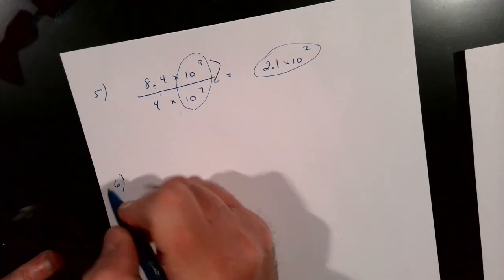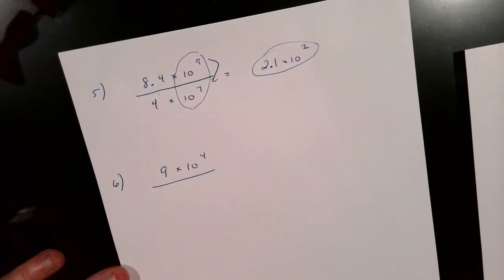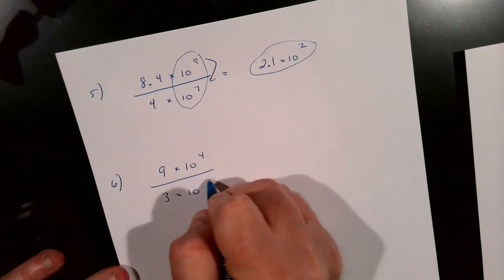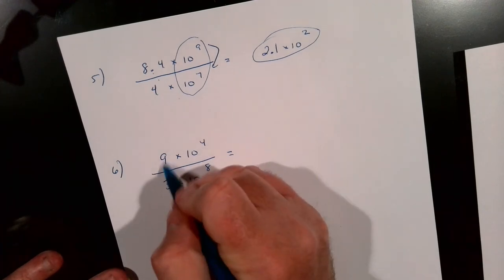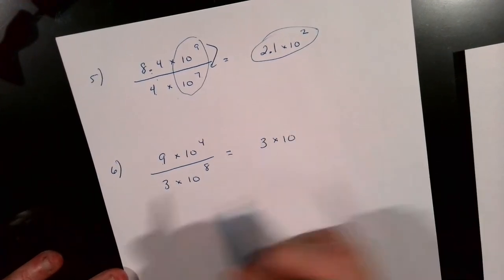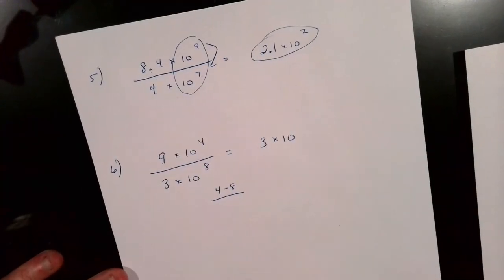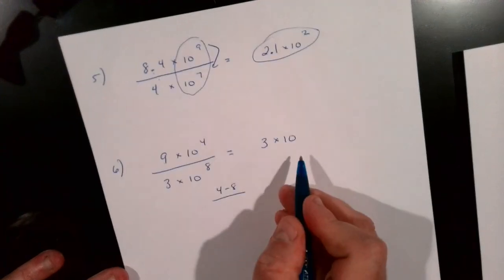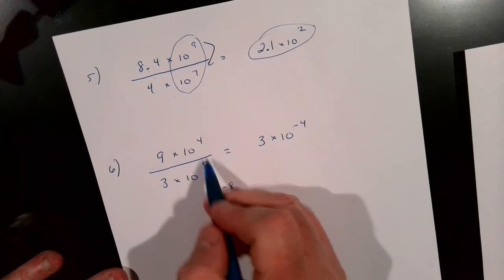Let's try one more. Say we have 9 times 10 to the 4th, and we divide that by 3 times 10 to the 8th. We divide the two numbers: 9 divided by 3 is 3. Then for the exponents, we subtract — but be careful: it's 4 minus 8, which is negative 4. So we end up with a negative power: 3 times 10 to the negative 4th. Watch for this — it may pop up on your assignment.